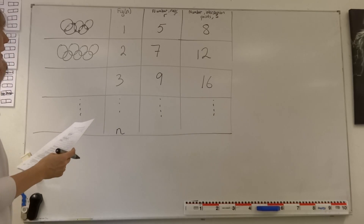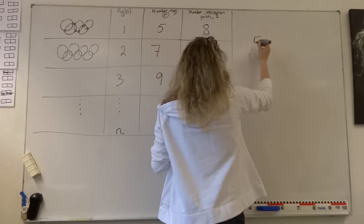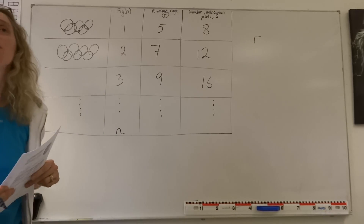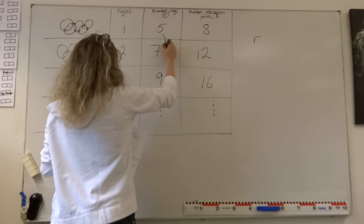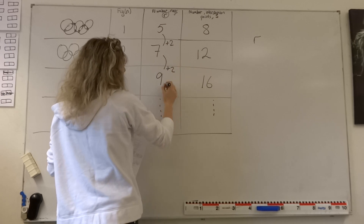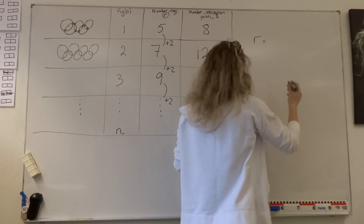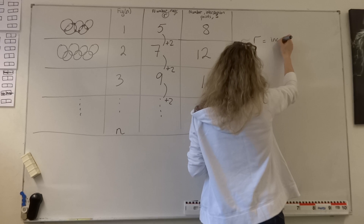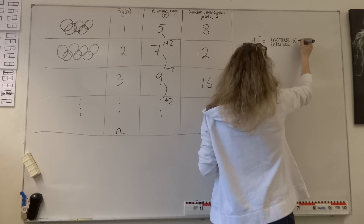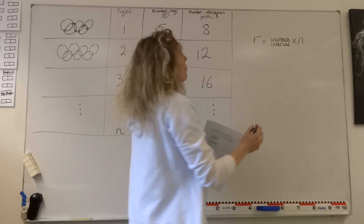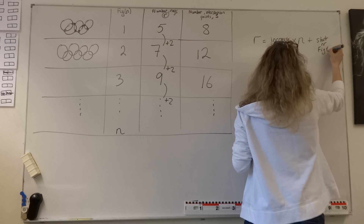The question asks: how many rings will there be in figure number 10? The easiest way is to work out the formula for the number of rings. We can see the number is increasing by the same amount each time — a constant increase of plus 2. The formula for number of rings will be the increase interval times the figure number n, plus the start number.